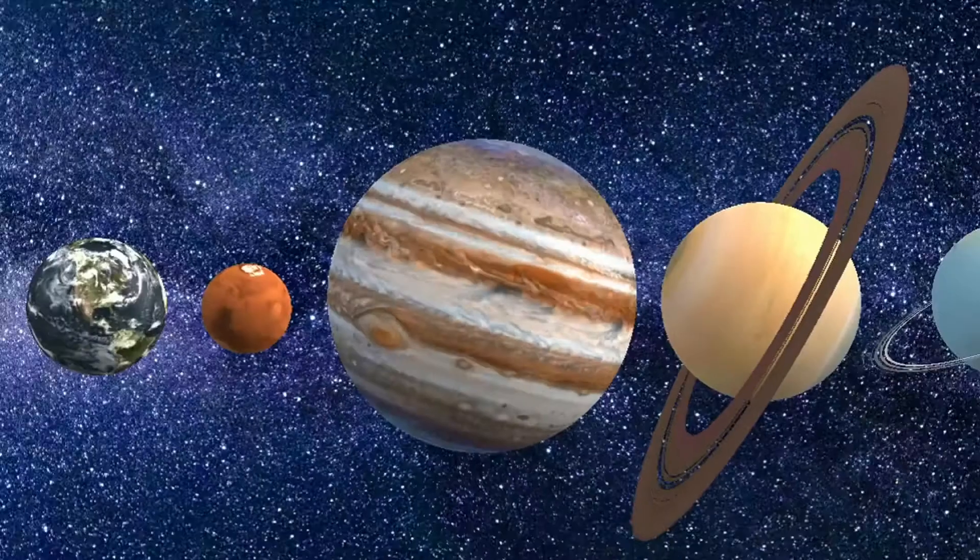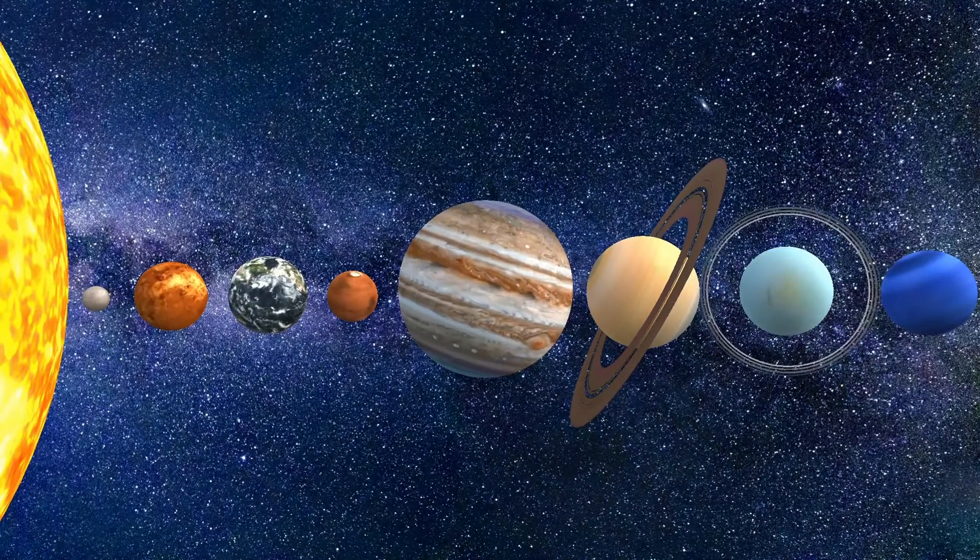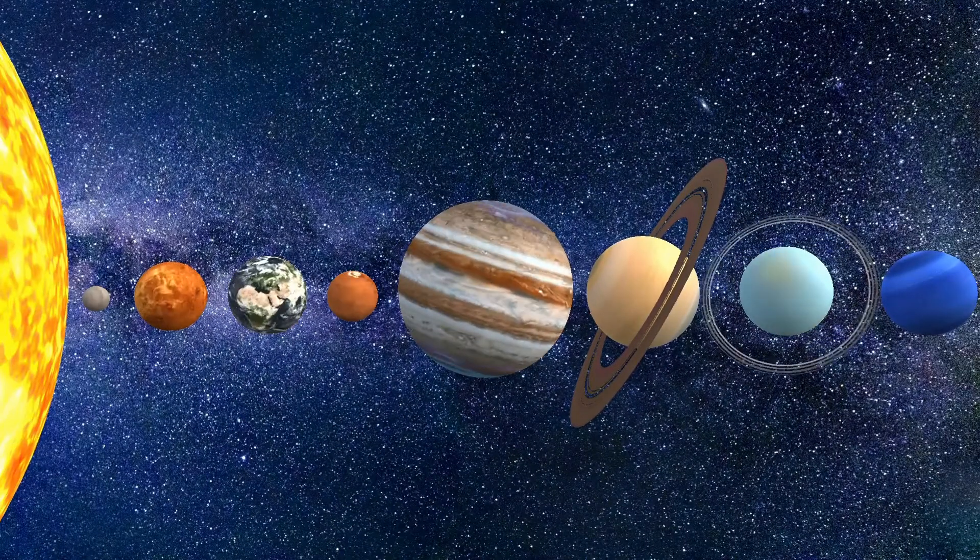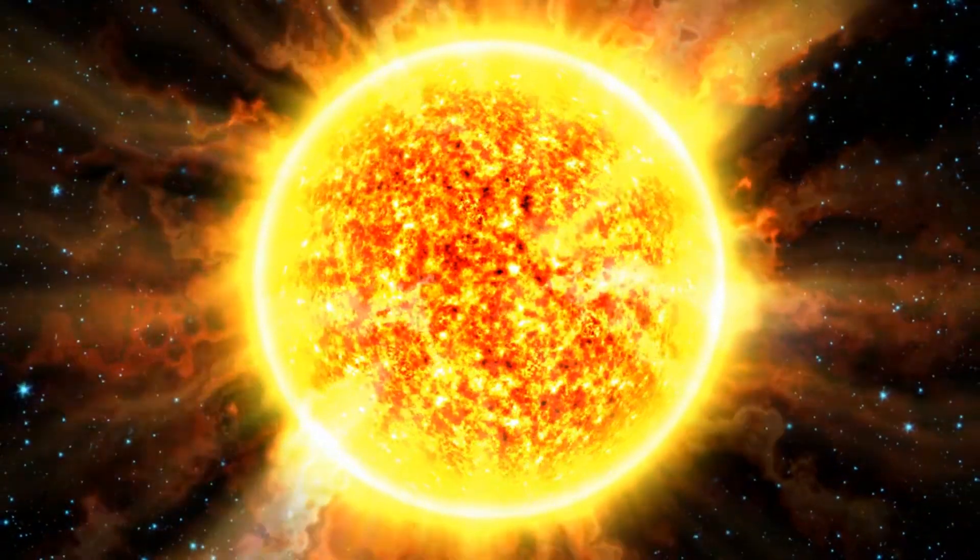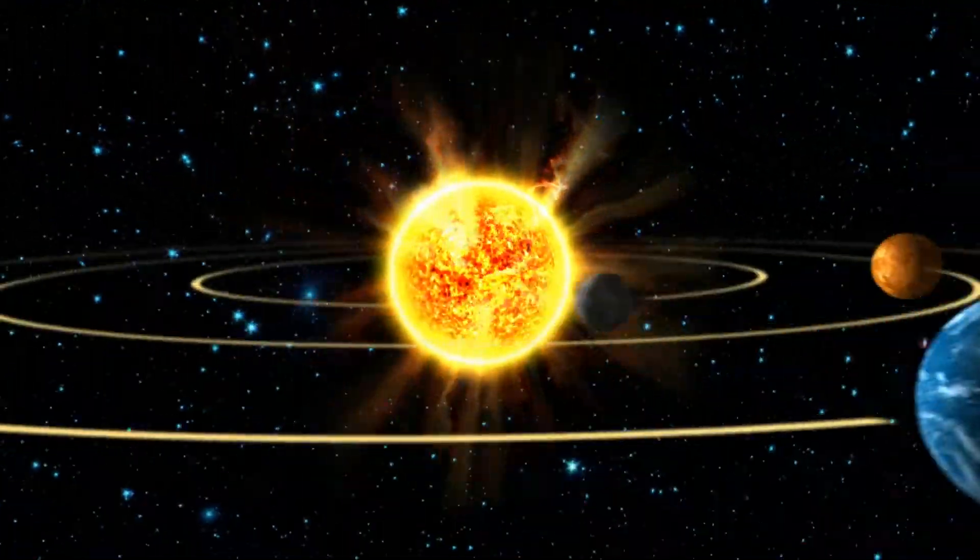This is startling because we all have a built-in misconception about the layout of the solar system. Sure, Venus comes closer to Earth than Mercury, but it also spends a lot of time on the opposite side of the Sun.